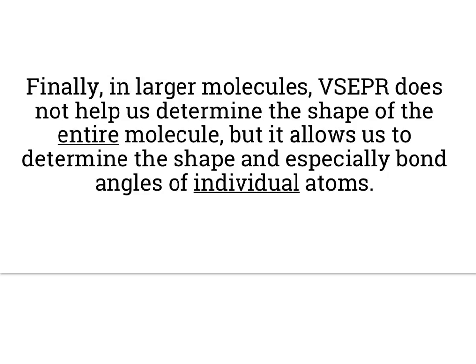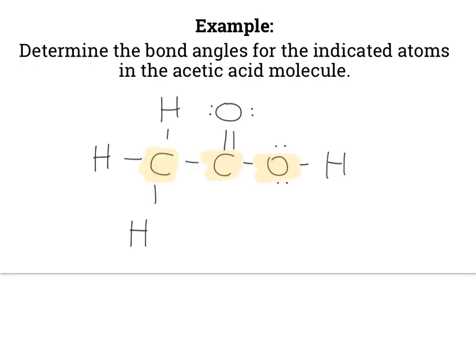However, in large molecules, VSEPR doesn't really help us determine the shape of a molecule. Though it can allow us to determine the shape and especially the bond angles of individual atoms within that molecule. So let's try that. What I'd like you to do is find the actual angle of the actual bonds associated with this atom, this atom, and this atom. What you're going to want to do is basically treat each of these almost as a molecule in and of themselves. They're their own central atom. So come back in a bit, and I'll give you answers.